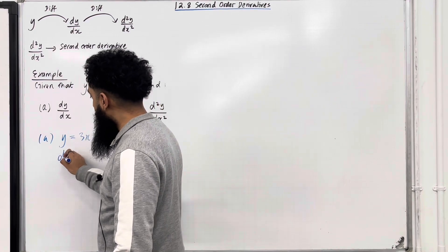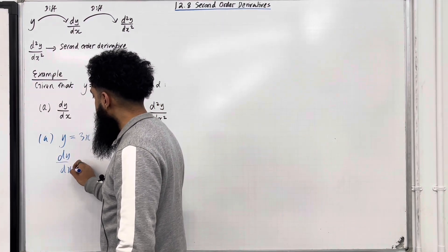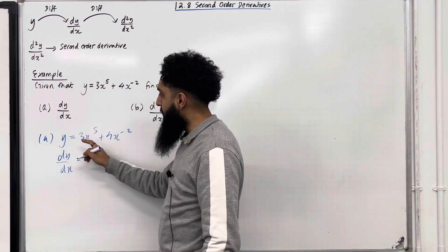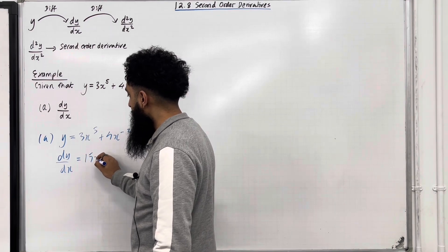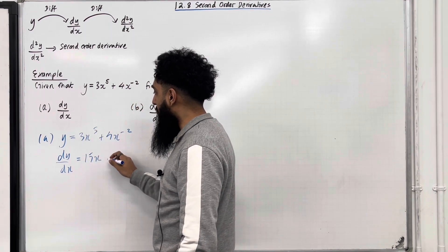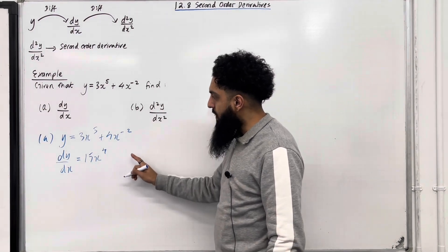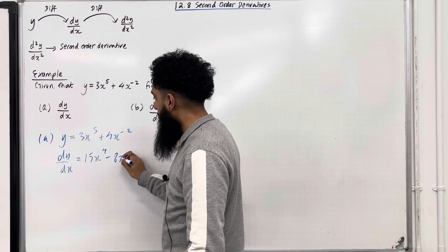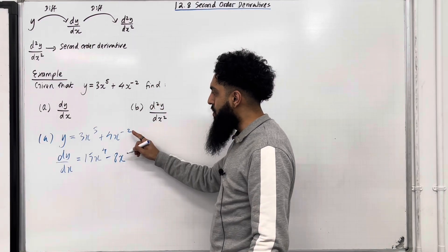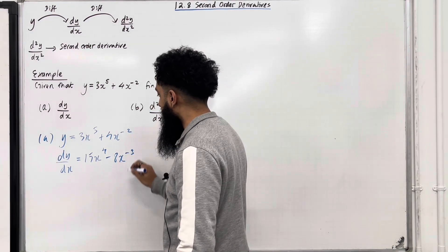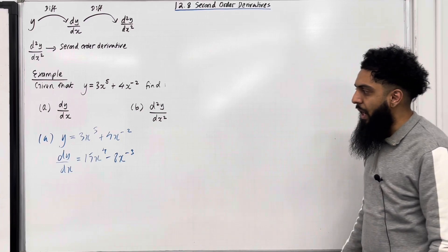So I've got dy over dx is equal to 5 times 3 which is 15, x to the power 5 take away 1 which is 4. Second term, I've got 4 times minus 2 which is minus 8, x to the power minus 2 take away 1 which is minus 3. That there is my dy over dx.